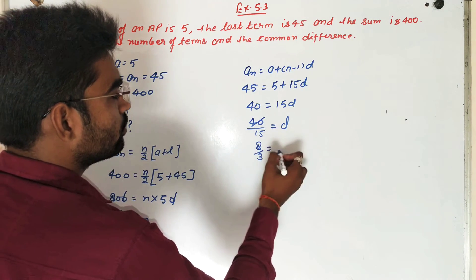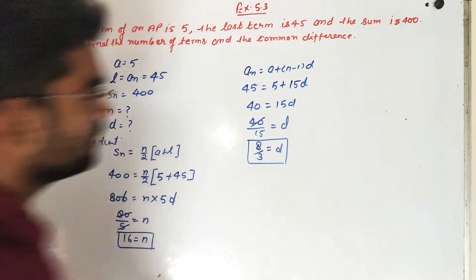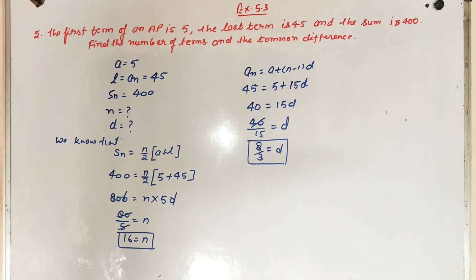8 upon 3 is equal to D. So common difference is equal to 8 upon 3. It is the solution of question number 5.